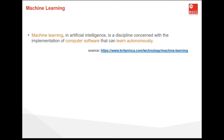The term machine learning was first introduced by a computer scientist in 1959, and defined in a summarized way as: machine learning enables a machine to automatically learn from data, improve performance from experiences, and predict things without being explicitly programmed. With the help of historical data, machine learning algorithms build a mathematical model that helps in making predictions or decisions without being explicitly programmed. Machine learning brings computer science and statistics together for creating predictive models. The more information we provide, the higher the performance will be.